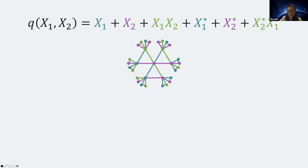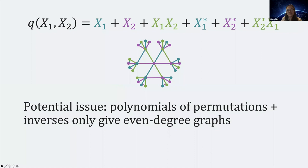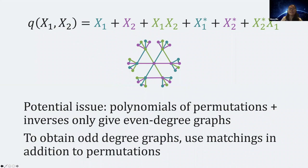One technical point: if you only plug in permutations and their inverses, you only get even-degree graphs, since one permutation plus its inverse is degree two. In this framework, you can also force some variables to take matchings (self-inverse generators) instead of just permutations. For the rest of the talk, I'll pretend that everything is a free generator or permutation.